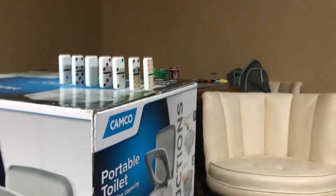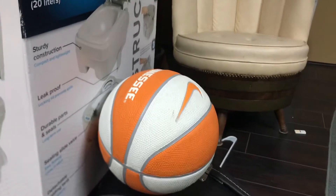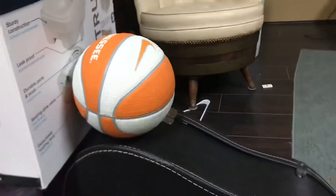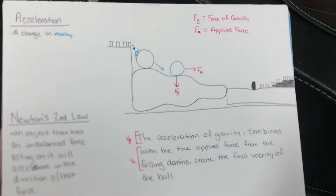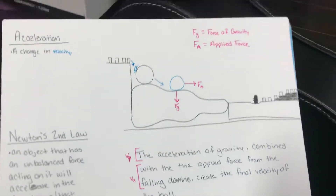As the first domino falls off the box, it makes contact with the basketball, applying force to cause the basketball to roll down the guitar case. This, combined with the acceleration of gravity, creates a final velocity as the ball makes contact with the shoe.